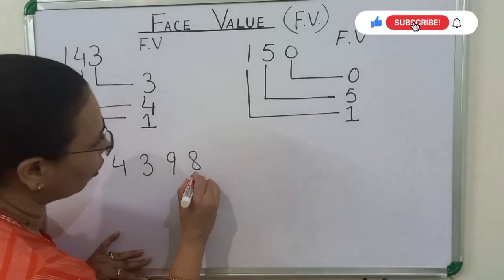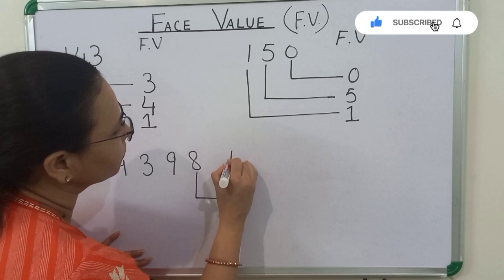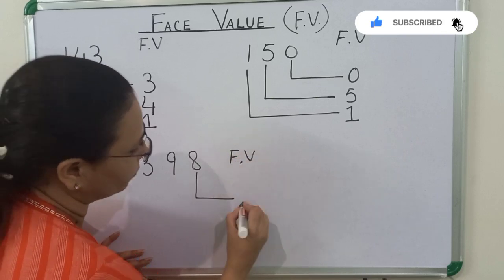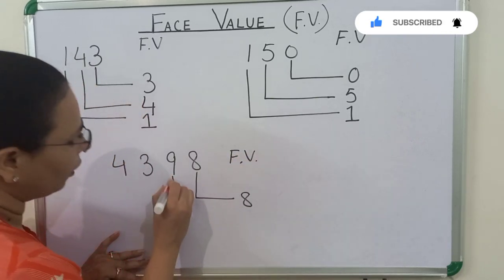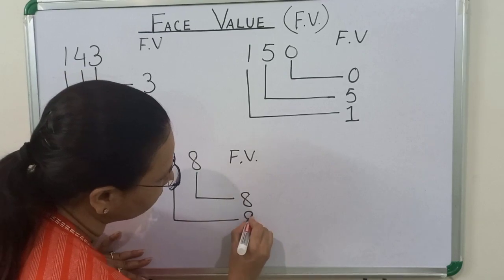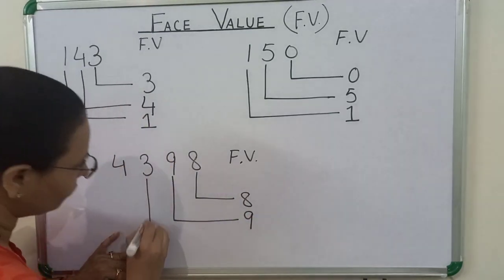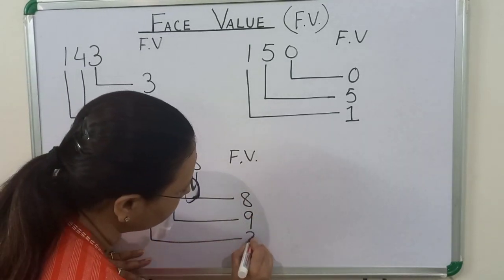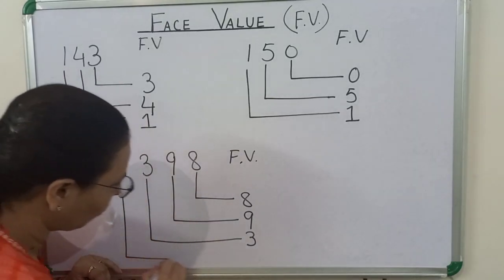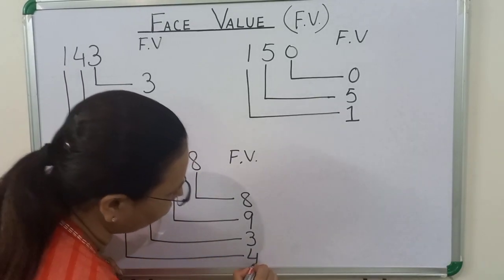The face value of 8 is 8. The face value of 9 is 9. The face value of 3 is 3. And the face value of 4 is 4.